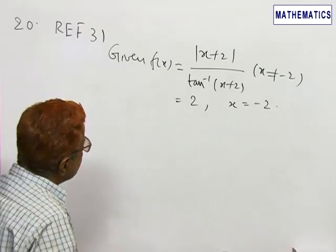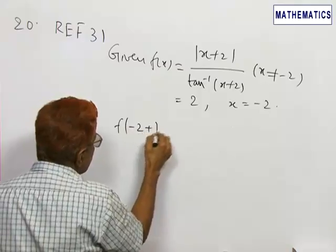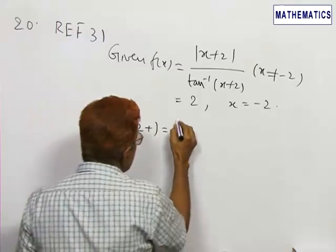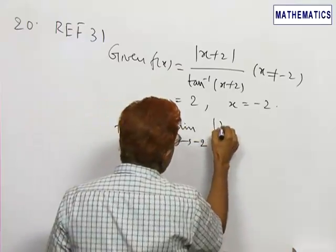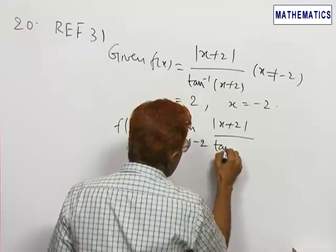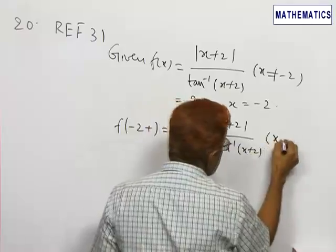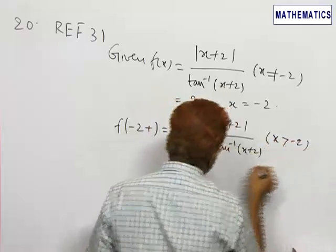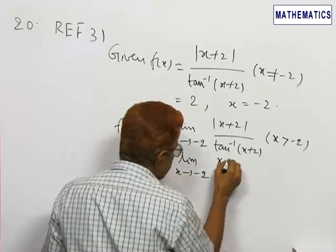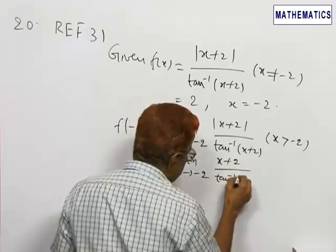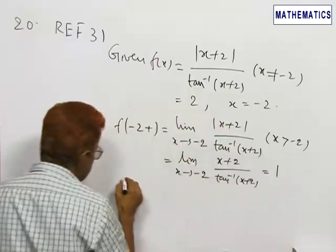f(-2⁺) is equal to the limit as x tends to minus two of |x+2| / tan⁻¹(x+2), with x greater than minus two, which becomes the limit of (x+2) / tan⁻¹(x+2), which is equal to 1.